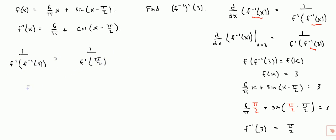Okay, so that's equal to 1 over f prime of pi over 2. So it's going to be 6 over pi plus cosine of pi over 2 minus pi over 2. Okay, so that's 1 over 6 over pi. Cosine of 0 is 1, so it's 1 over 6 over pi plus 1.